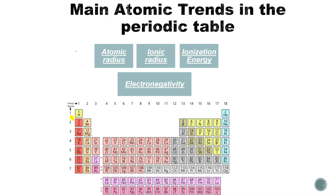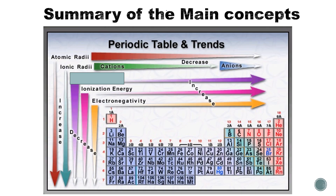We have now covered all periodic trends: atomic radius, ionic radius, ionization energy, and electronegativity. In summary: atomic radius decreases from left to right and increases from up to down. Cations are positive ions and anions are negative ions — ionic radii similarly decrease from left to right and increase from up to down. Ionization energy and electronegativity are similar to each other and opposite to atomic radius.